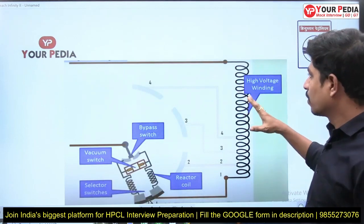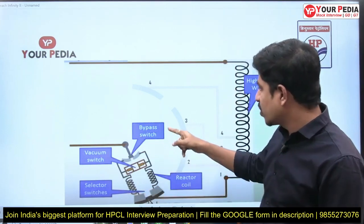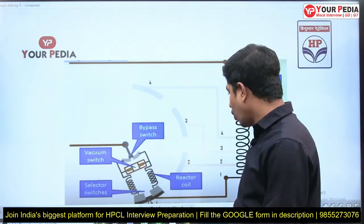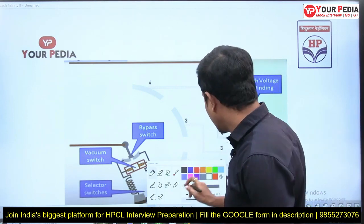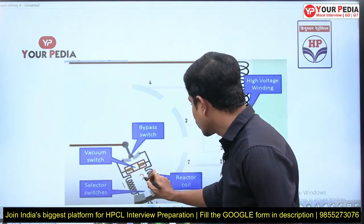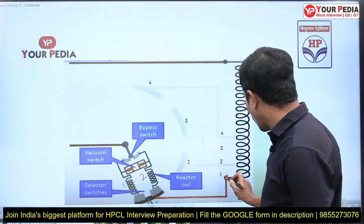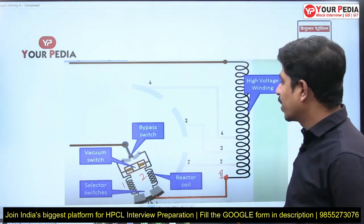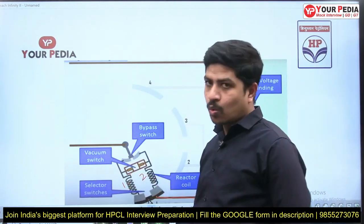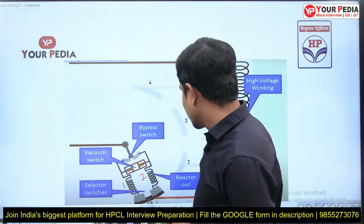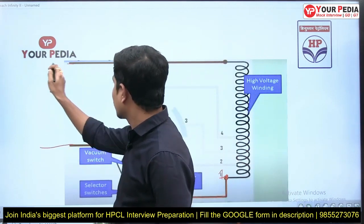This schematic is sourced from Google. This is the HV side on-load tap-changing schematic. There are two coils — I'll name them coil 1 and coil 2. Presently, the total winding is connected at position 1 on the primary. There is a vacuum switch, there are two selector switches, and there is a bypass switch. The two selector switches are connected to the supply.